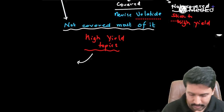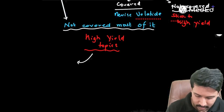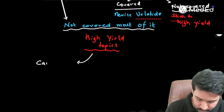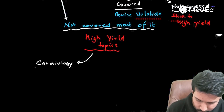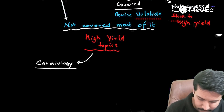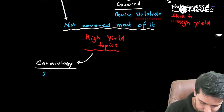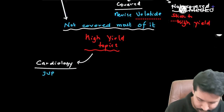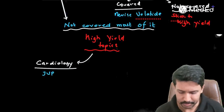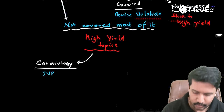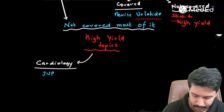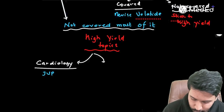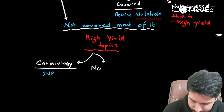Here are the important high-yield topics I recommend. Starting with Cardiology: I only want you to concentrate on JVP. You can expect almost one question from it, so spending 20 to 30 minutes on it will likely get you one mark.